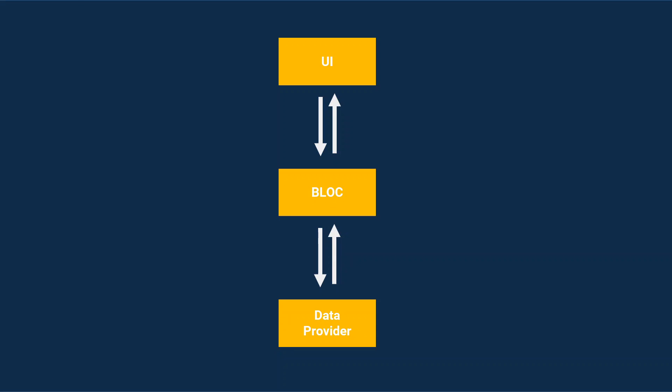BLoC applies the business logic to the current state, recreates a new state, and sends it to the UI. Whenever the UI receives a new state, it re-renders itself to show the latest version. So BLoC simply contains the business logic, and based on that logic it creates a new state. Whenever a new state is created, the UI re-renders itself to show the latest version.